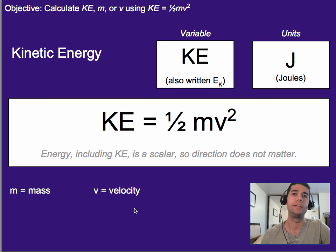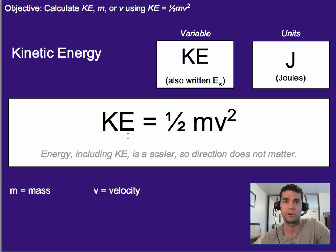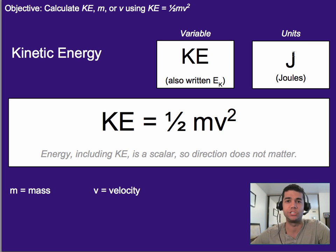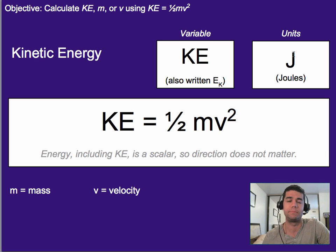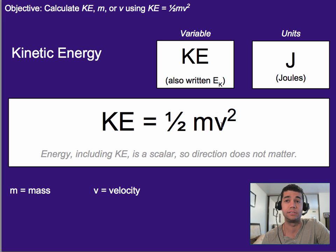The formula for kinetic energy is KE equals one half mv squared, where KE stands for kinetic energy. The units for all types of energy are joules, represented with a capital J. It is one half times mass times velocity squared — only the velocity is squared, not the mass or the one half.